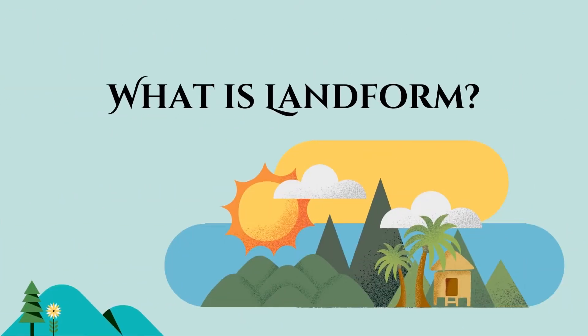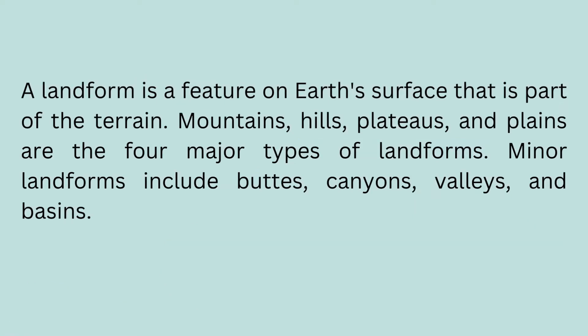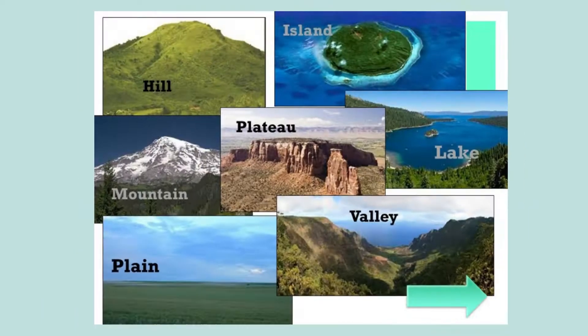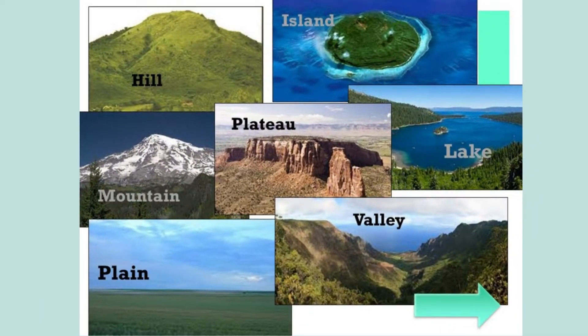What is a landform? A landform is a feature on Earth's surface that is a part of the terrain. Mountains, hills, plateaus, and plains